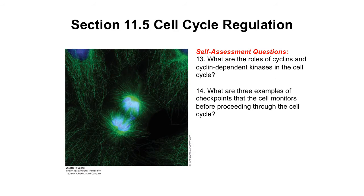For the self-assessment questions, please try to answer: first, what are the roles of cyclins and cyclin-dependent kinases in the cell cycle? And second, what are three examples of checkpoints that the cell monitors before proceeding through the cell cycle?